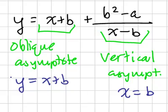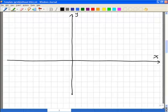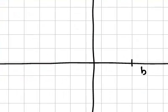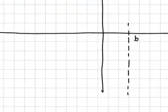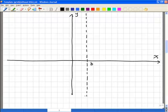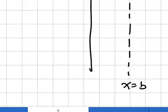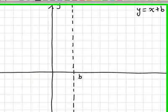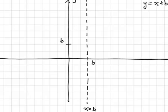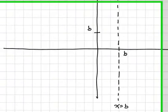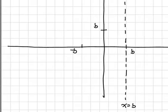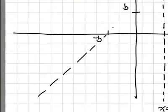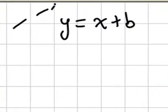Now let's start to draw the earlier stages of the graph. We know the asymptotes are at x equals B, so let's draw the vertical asymptote first. Make sure you label, because if not you'll be penalized. So this is the vertical asymptote. The other asymptote is y equals x plus B. When x is 0, y equals B, so it must pass through this point on the y-axis. And when x is negative B, y is 0, so it must pass through the point negative B on the x-axis.